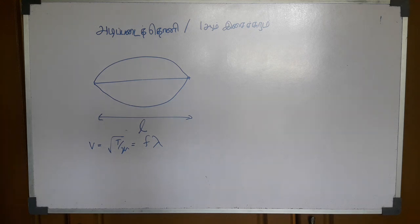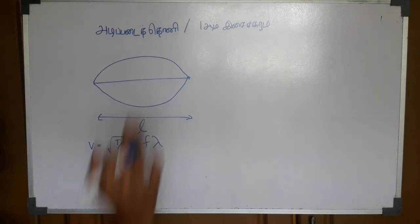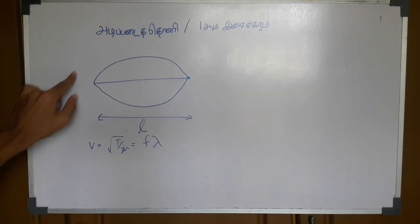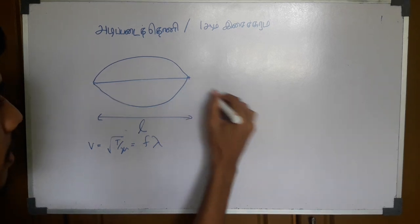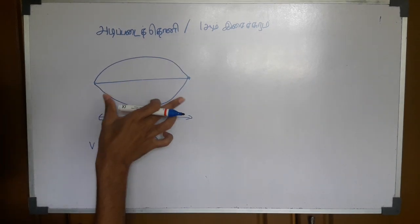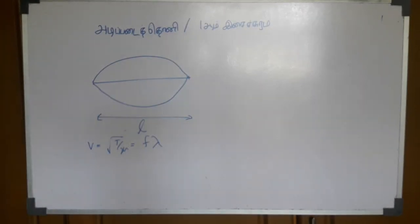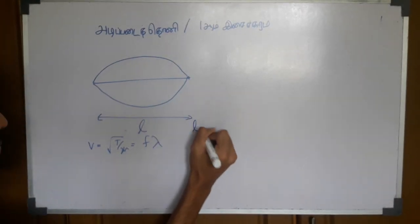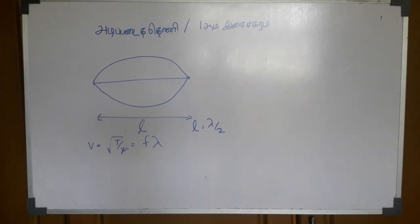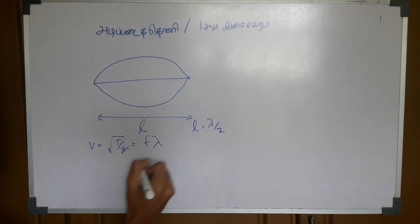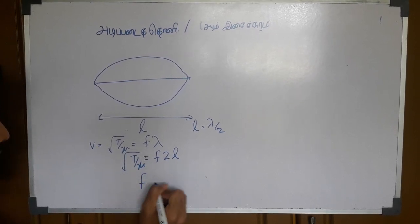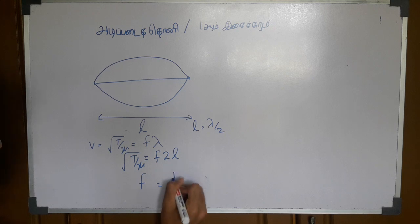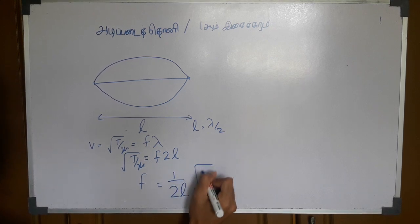Now if you add f, so if you add f, then lambda y, 2y. So what do we say in this long term? 2L. F into 2L root of t over mu. So what do we say in this f? 1 over 2L root of t over mu.